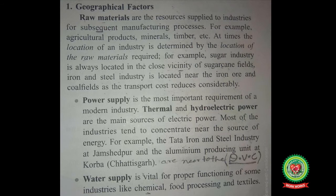First, raw materials are the resources supplied to industries for subsequent manufacturing processes. Raw material means the basic manufacturing materials from which a product is made — for example, agricultural products, minerals, timber, etc. At times, the location of an industry is determined by the location of the raw material required. For example, the sugar industry is always located in the close vicinity of the sugarcane fields. Iron and steel industry is located near iron ore and coal fields, as the transport cost reduces considerably.